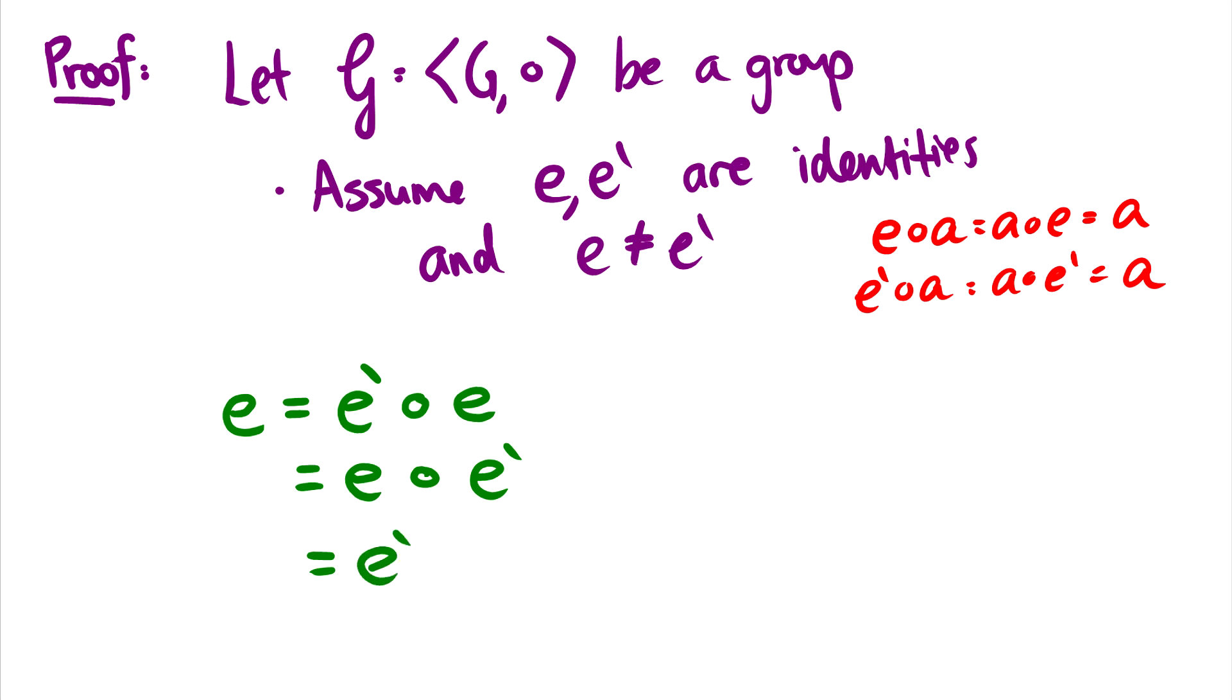So we've found that these two identity elements are actually equal, which means if we have two identities and we assume they're not equal to themselves, eventually we come to the conclusion that, well, actually they are equal, which means by some contradiction in our reasoning here, that we can only have one identity element. Because if we have two and we say they're not equal, it turns out they're actually equal.